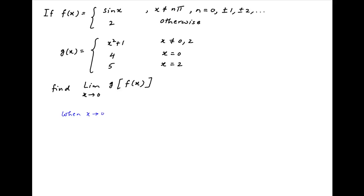When x tends to 0, x is not equal to 0. Clearly, it is not equal to plus or minus π, plus minus 2π and so on as well. In other words, x is not equal to nπ and therefore,